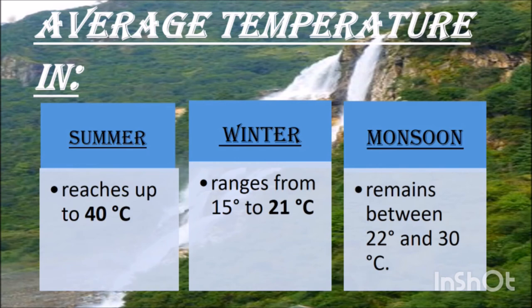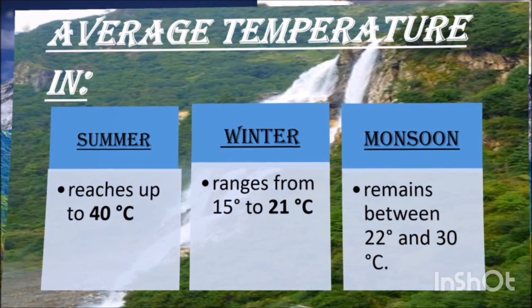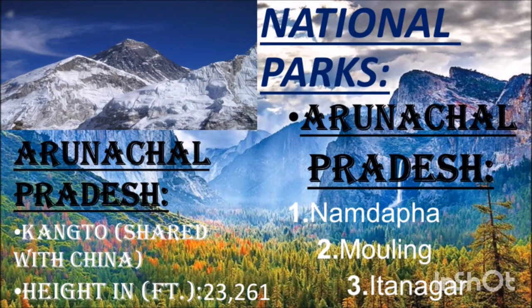Climate in Arunachal Pradesh: During summer it reaches up to 40 degrees Celsius. In winter it ranges from 15 to 21 degrees Celsius, while monsoon remains between 22 and 30 degrees Celsius. The surrounding mountain Kangto is 23,261 feet and is shared with China. National parks found in Arunachal Pradesh are Namdapha, Mouling and Namdapha.